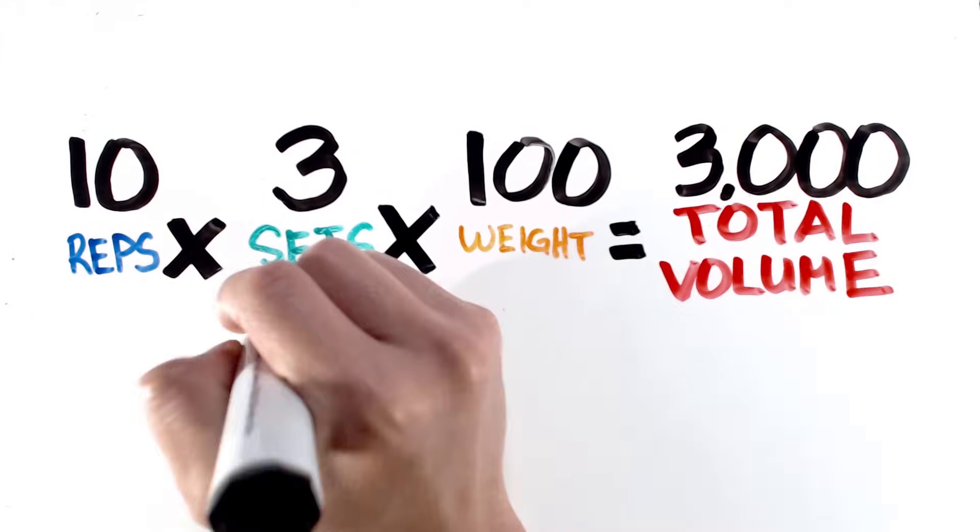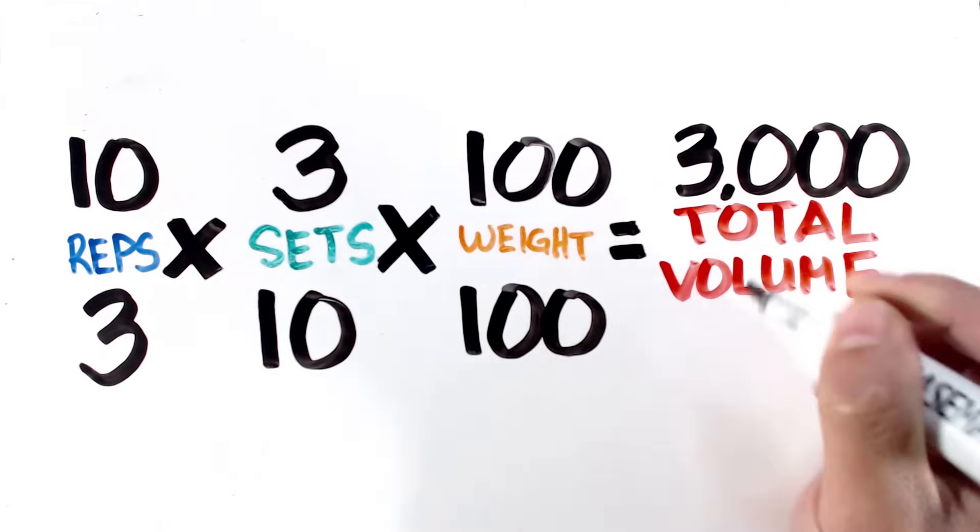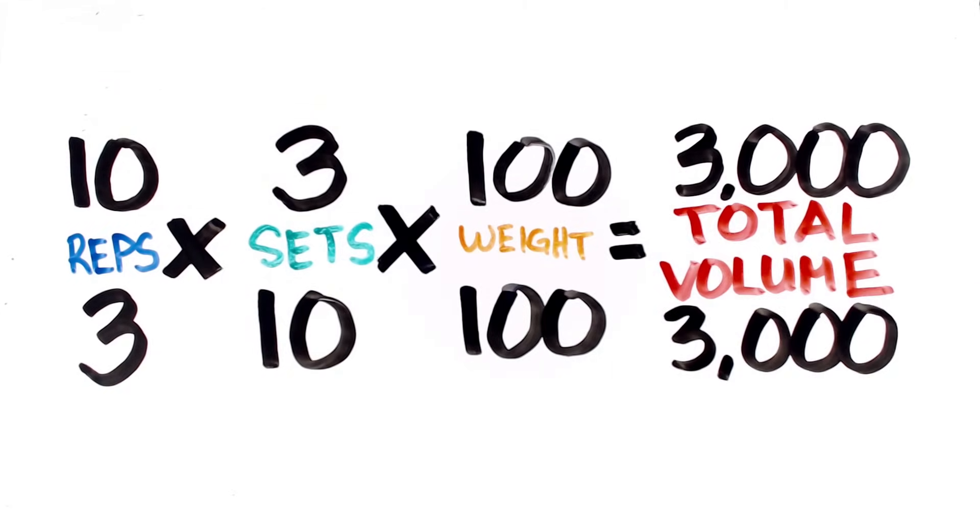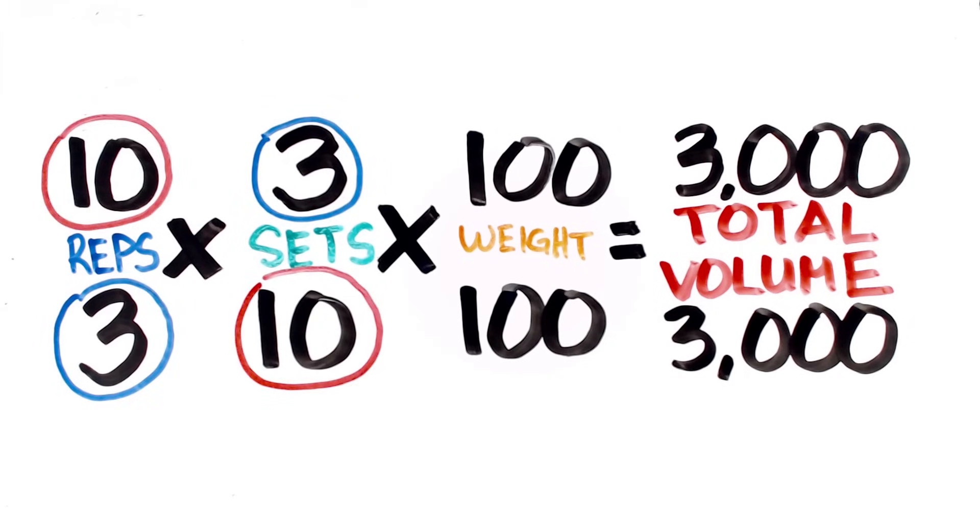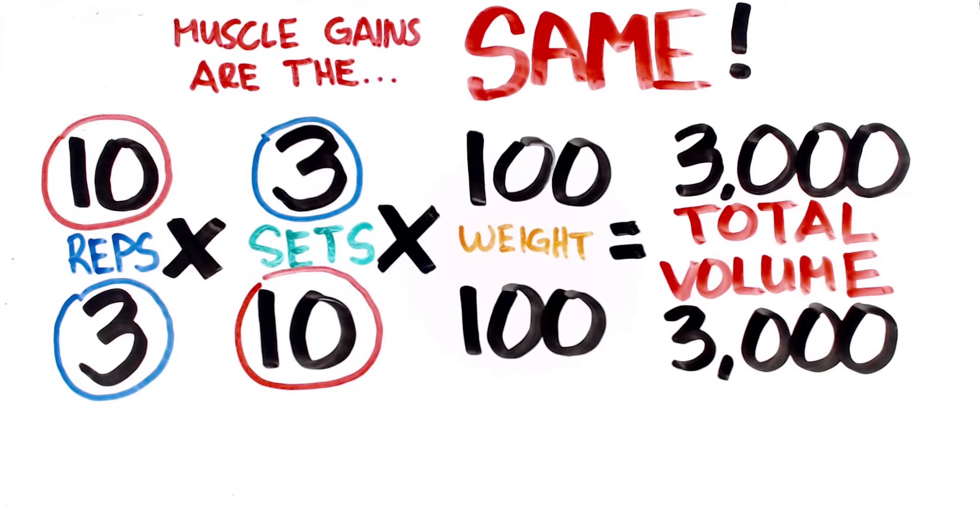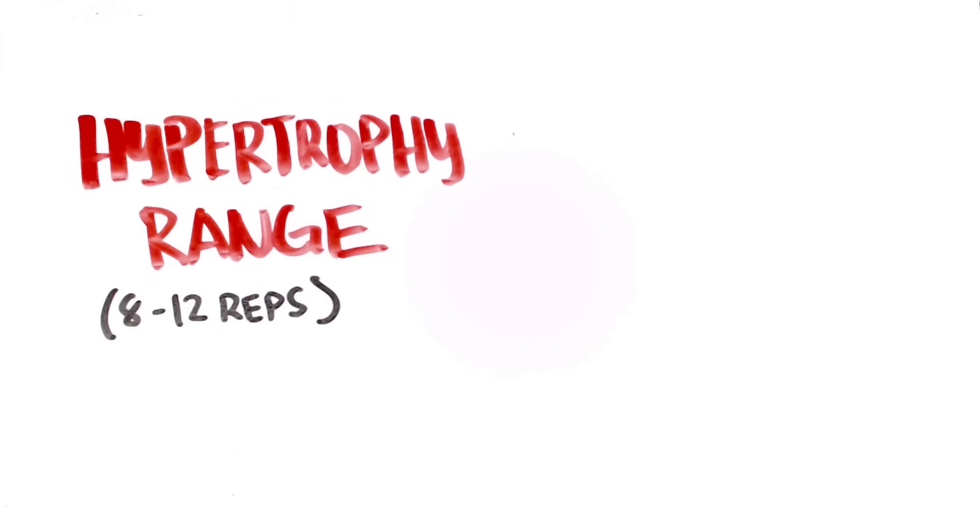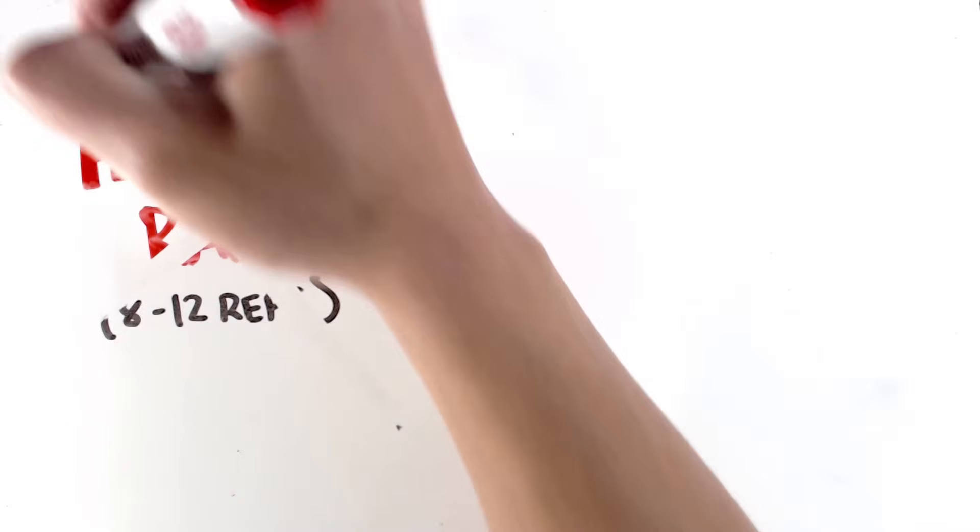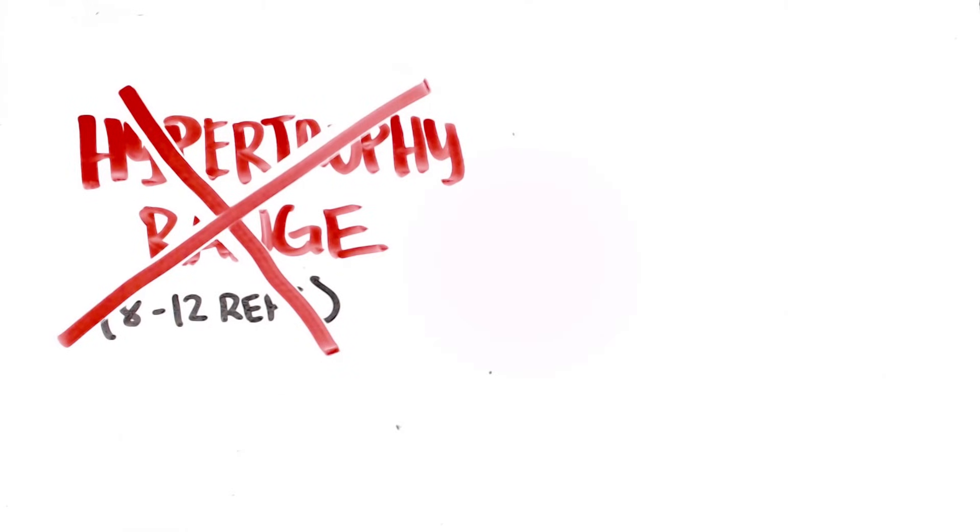Conversely, if you do 10 sets of 3 reps with the same weight, you'll also come to a total volume of 3000. What the research says is that even though the number of sets and reps are different, the gains in muscle hypertrophy are very close to being the same using the same total volume. In essence, this throws the claim out the window of performing 8-12 reps in order to build muscle, since the rep range isn't nearly as important as the total volume. But this only applies to hypertrophy.